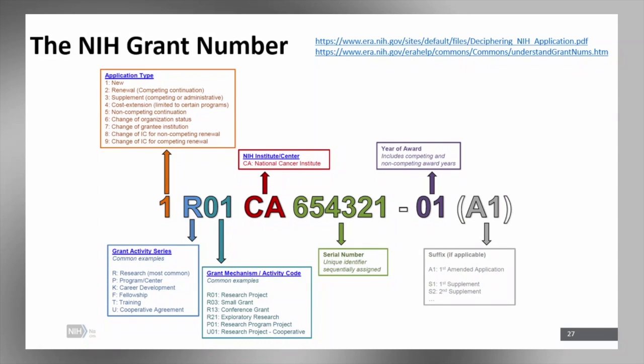But the combination of the two-letter IC code and the next six-digit serial number makes up the core grant number that's always going to be unique. There may be circumstances where a grant is transferred from one institution to another. Then that grant number will change. Except for that circumstance, that core number will continue through the life of the project and subsequent competing, successful competing iterations.